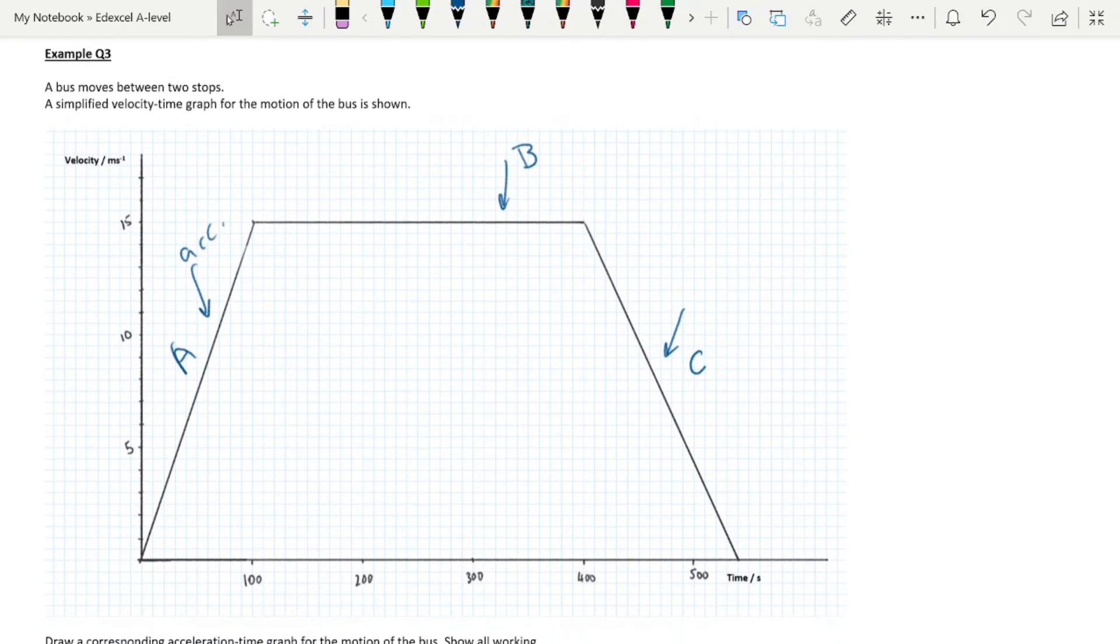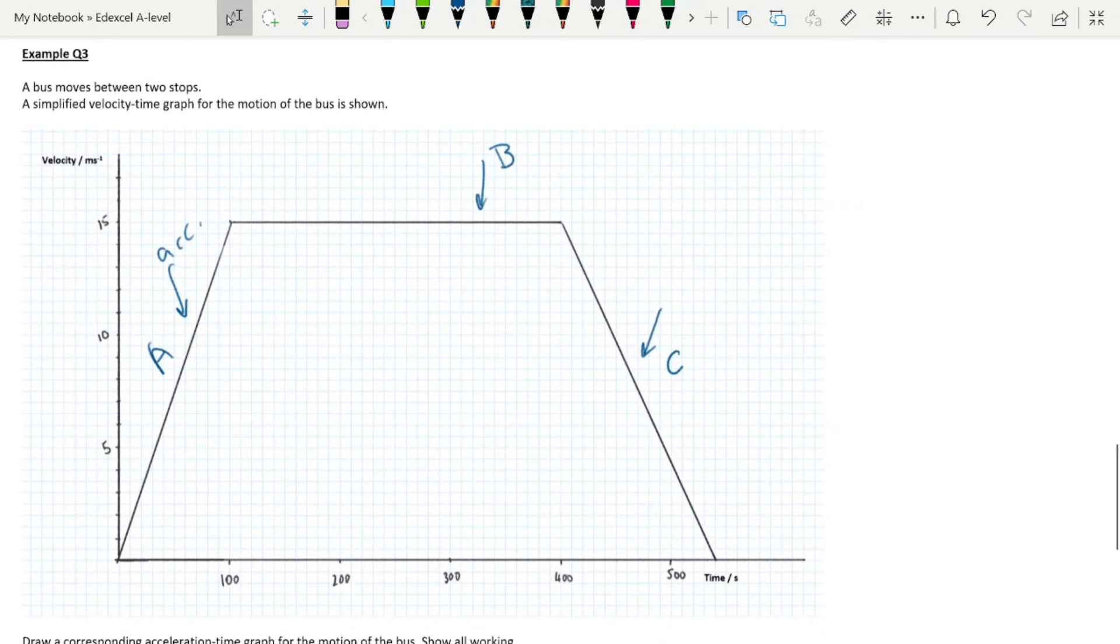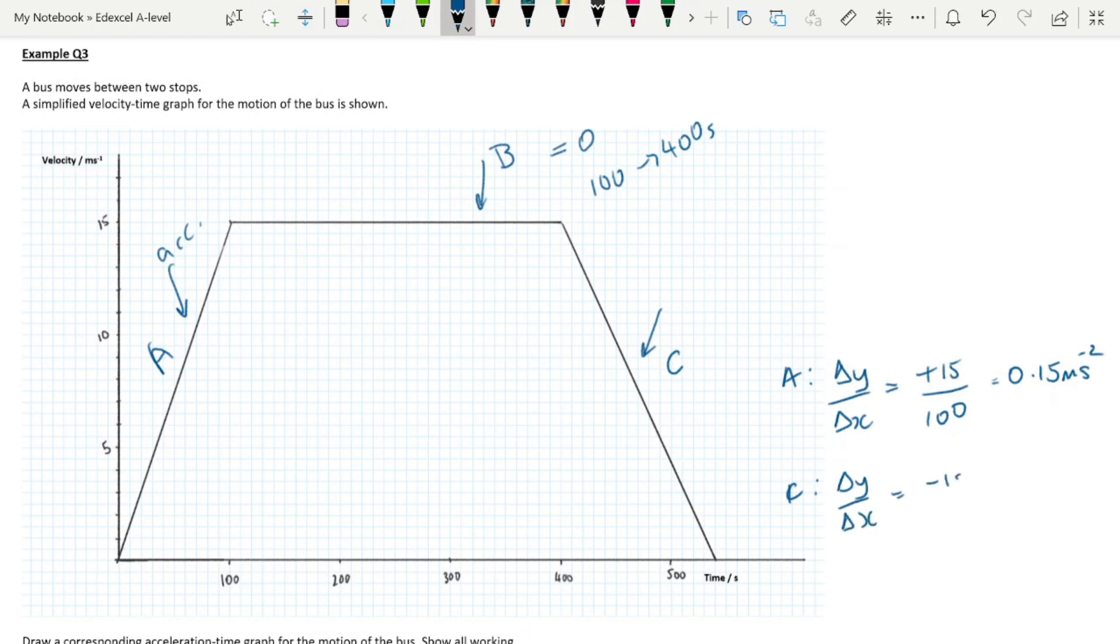If we want an acceleration-time graph, we need to know what these accelerations are. In B, that's going to be an acceleration of zero between the times of 100 and 400 seconds. For A, we need to do some calculations. We're going to do the change in y over the change in x, which is plus 15 over 100, giving us an acceleration of 0.15 meters per second squared. And part C, change in y over change in x, minus 15 over 140, equals minus 0.107.